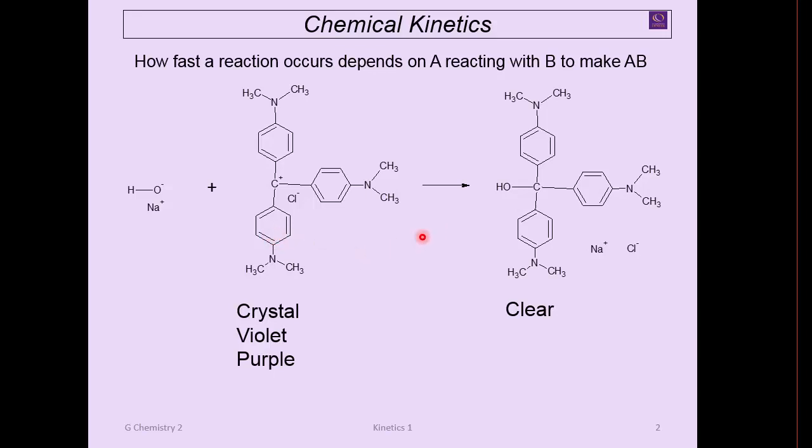So let's talk about the rate—how fast a reaction occurs depending on A reacting with B to make AB. Basically, A reacting with B to make this new compound AB.